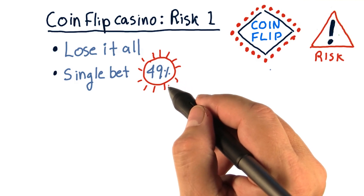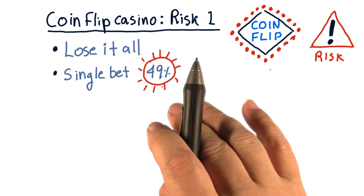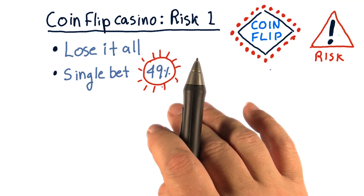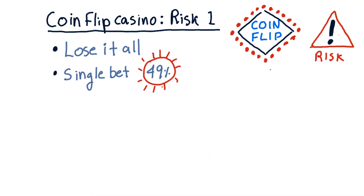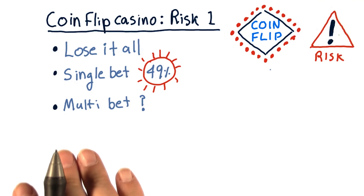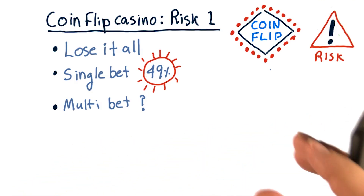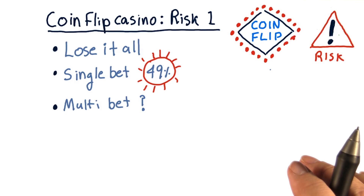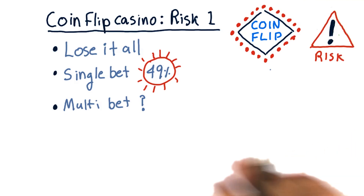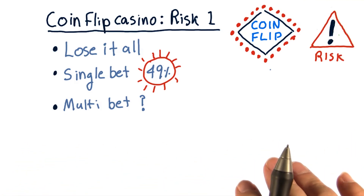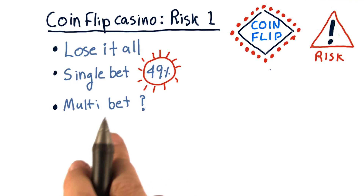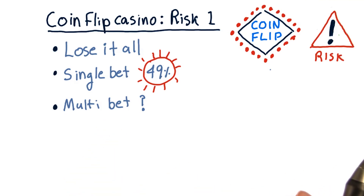That's pretty high. Consider that in the context of: would you put your savings account on a single bet like that? Now consider the multi-bet case where we put one token on each of the 1,000 tables. There are 1,000 coin flips, and our return is determined by the result of all those individual 1,000 coin flips. What is the chance that we would lose it all in that case?